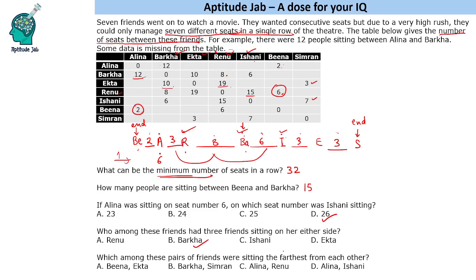Which among these pairs of friends was sitting farthest from each other? Bina and Ekta are quite far — possibly the answer. Barkha and Simran are closer, so definitely not the farthest among the given options. Alina and Renu are very close. Alina and Ishani — checking their distance — so definitely Bina and Ekta are the farthest among the given options. Alina and Ishani are only this far, so the answer is Bina and Ekta.